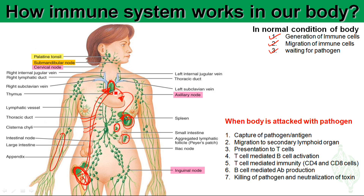Most cells generated in the primary lymphoid organ also go to most tissues of the body. For example, macrophages, dendritic cells, and other tissue-resident cells go to specific tissues and reside there to detect whether a foreign antigen or pathogen is invading the body. If they don't find any, they either die or stay there for a long time.